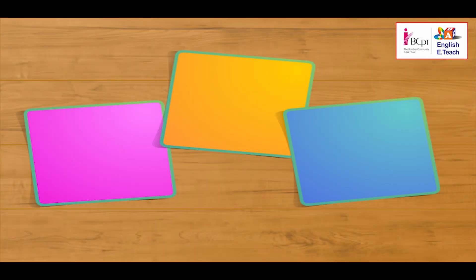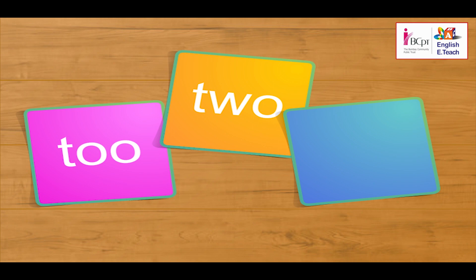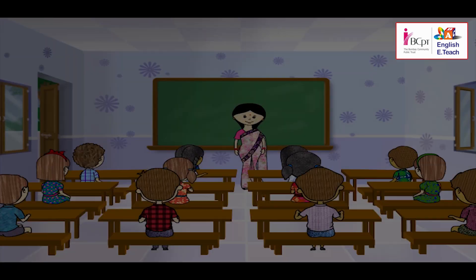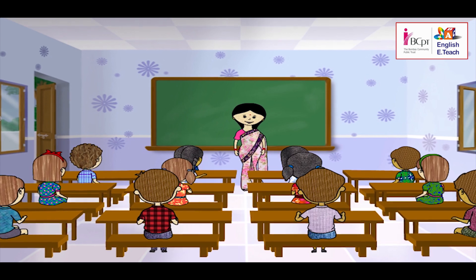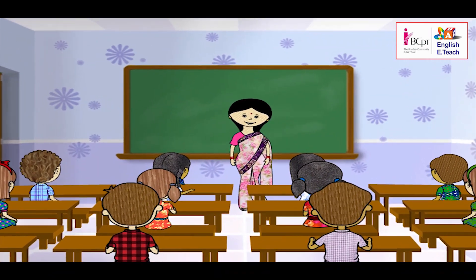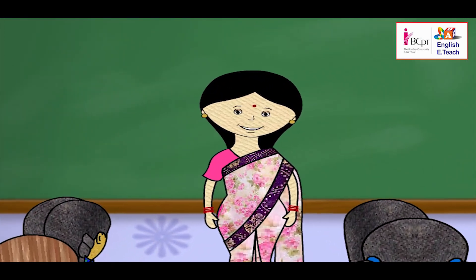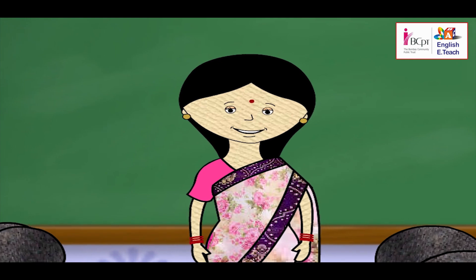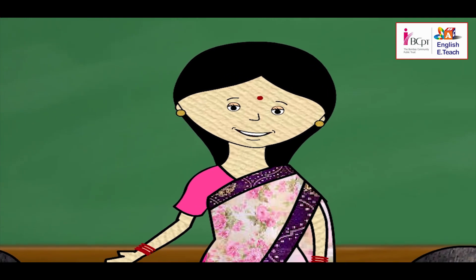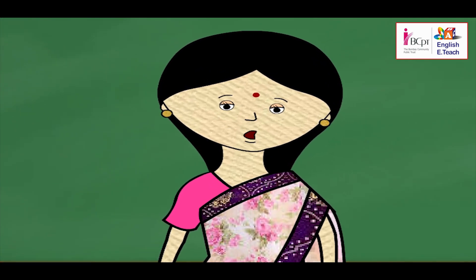Take three pieces of paper and write TO, TWO, and TOO on them. I will read a sentence using one of these words. When I call your name, please hold up the paper which has the correct spelling of the word.